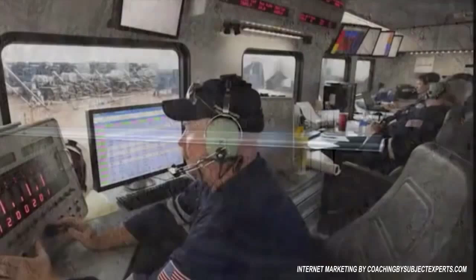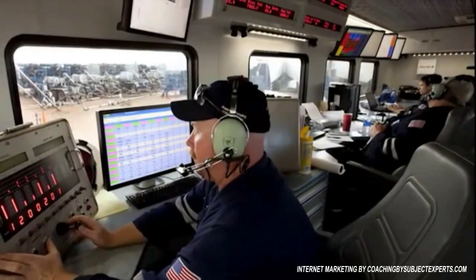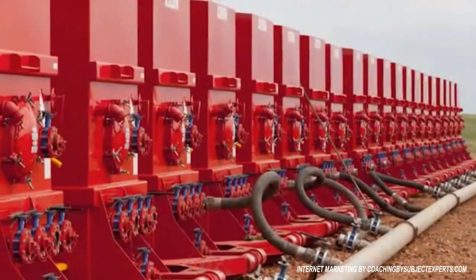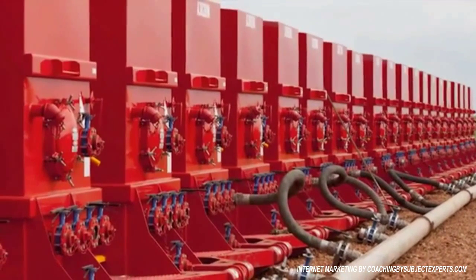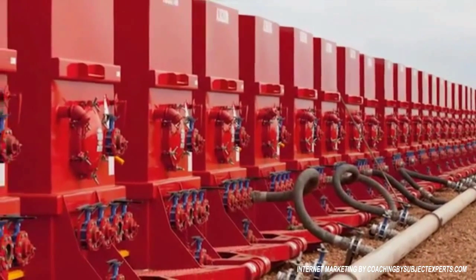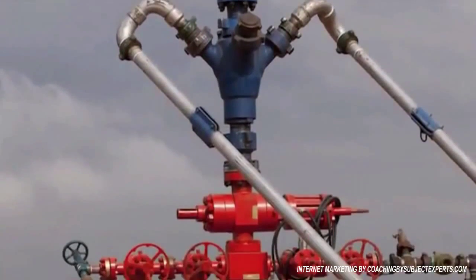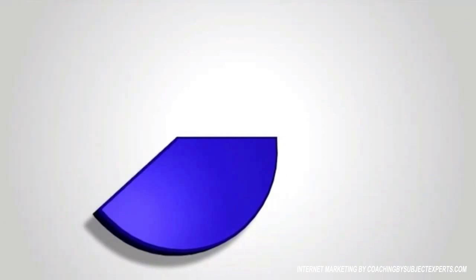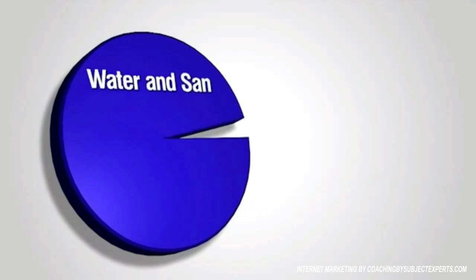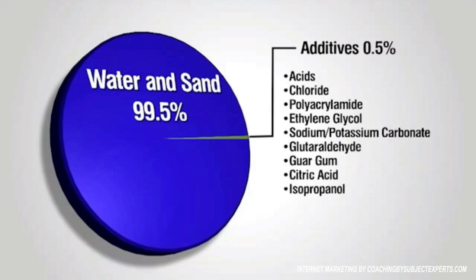The perforation gun is then removed in preparation for the next step: hydraulic fracturing. The process consists of pumping a mixture of mostly water and sand, plus a few chemicals, under controlled conditions into deep underground reservoir formations. The chemicals are generally for lubrication, to keep bacteria from forming and help carry the sand. These chemicals typically range in concentrations from 0.1 to 0.5% by volume and help to improve the performance of the stimulation.